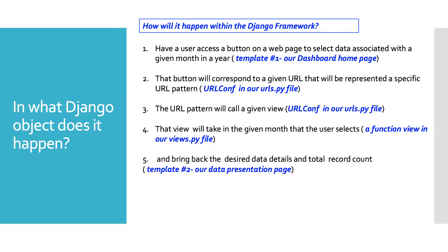So how will the objects in Django take care of our requirements? To have the user access a button on the web page, we're going to have a landing page — our main dashboard home page, which I'm calling Template Number One. The button corresponds to a URL pattern in our urls.py file. That pattern has a view with the logic we want, and that view in views.py will take in the given month the user selects and bring back the desired data details and total record counts in what I call Template Number Two — our data presentation page.